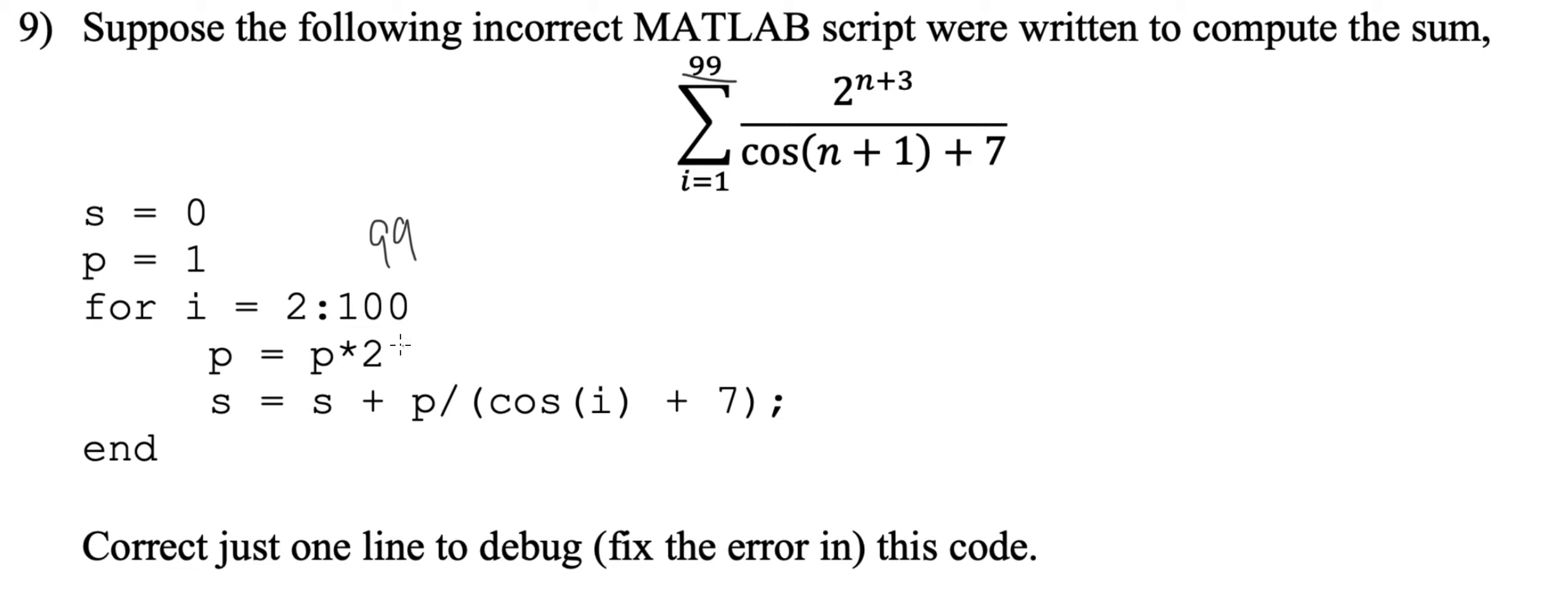P equals P times 2, so this is a running product. Since it's times 2, we know that every time n increases we're multiplying by 2 every single time. Then it says s equals s plus P, which is the running product, divided by cosine of i plus 7. Okay, so this seems to be fine right here, this seems to be our running sum.